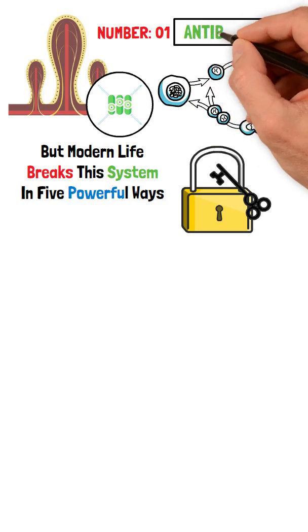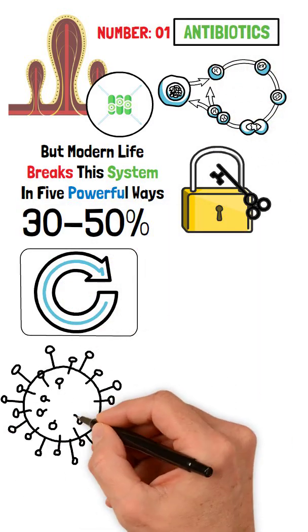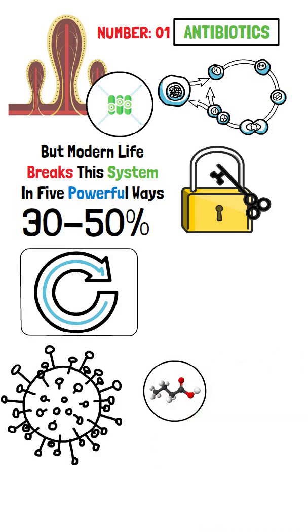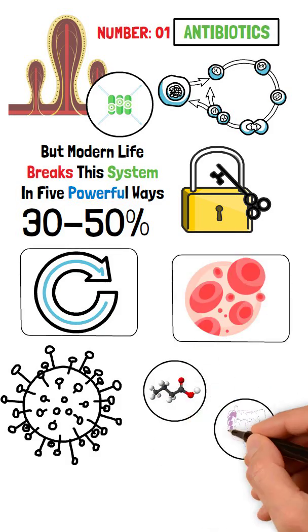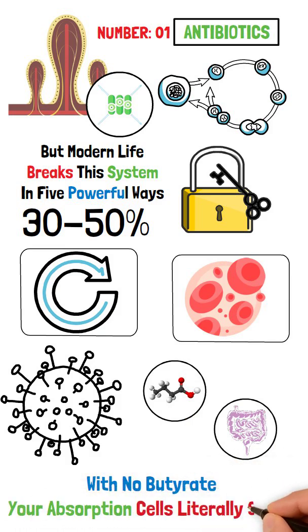Number 1: Antibiotics. One round wipes out 30-50% of gut bacteria, including butyrate producers, the cells that feed your intestinal lining. With no butyrate, your absorption cells literally starve.